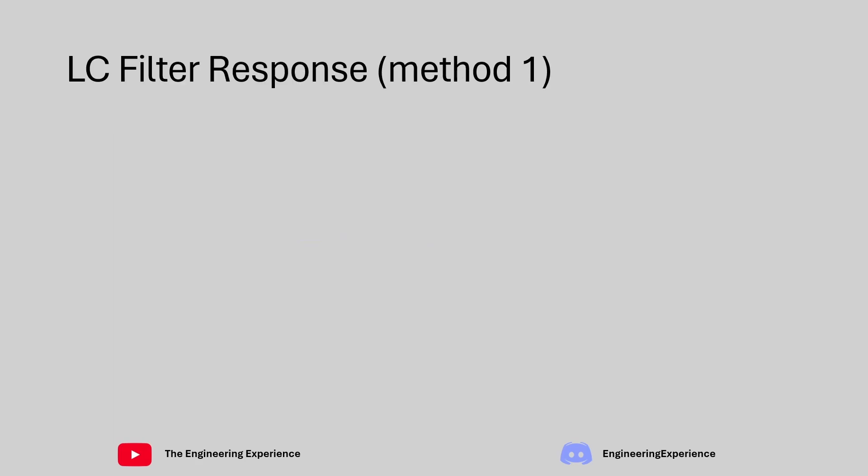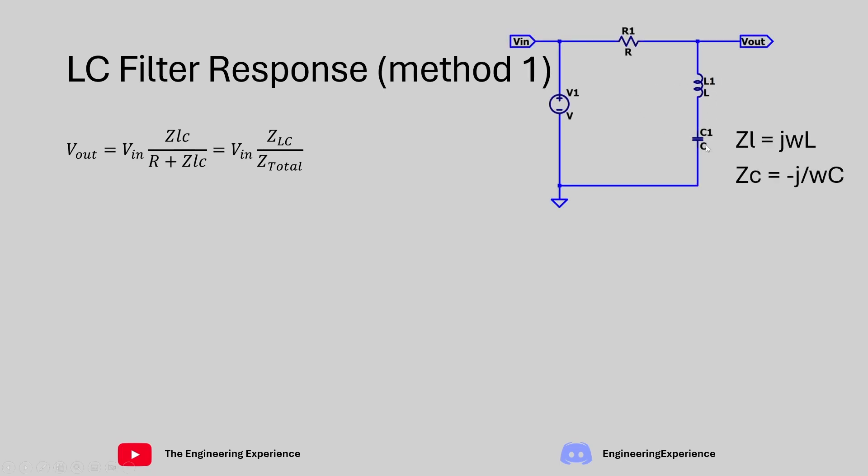So method 1 I'm doing using a phasor diagram but I'm just going to show you what I'm doing. So we looked at the circuit which had the L and the C component in parallel with the load and the R component which was in series with the load. Using our potential divider equation again as we have done many times before the V out is equal to V in times the parallel components which is LC.